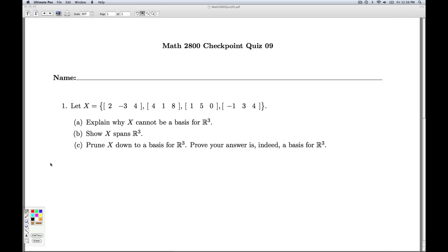Part B. Part B and C really go together. There's two approaches to show that X spans R3. And then, depending on which approach you use, there's a way to prune it down to R3. One of them uses the concept of row spaces. One of them uses the concept of column spaces. So, let's start with the row space approach.